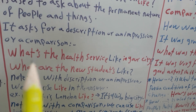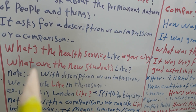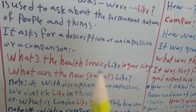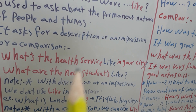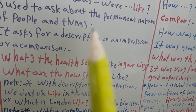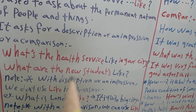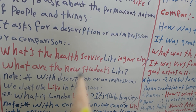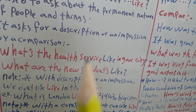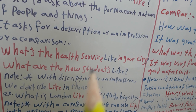We will see in the example: 'What's the health service like in your city?' The speaker is asking about the health service in the city — they want the listener to describe or give an impression of the health service. Another example: 'What are the new students like?' The speaker wants the listener to give a description or impression of the students.